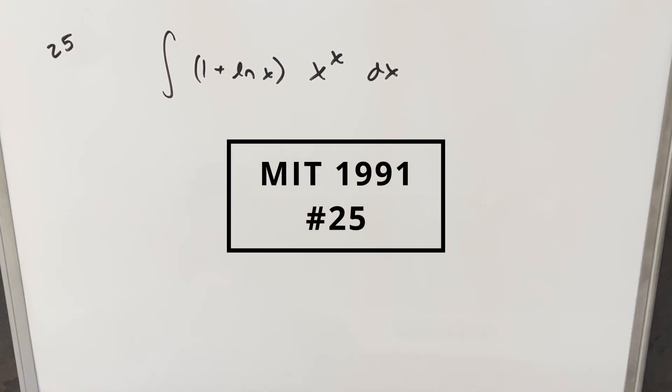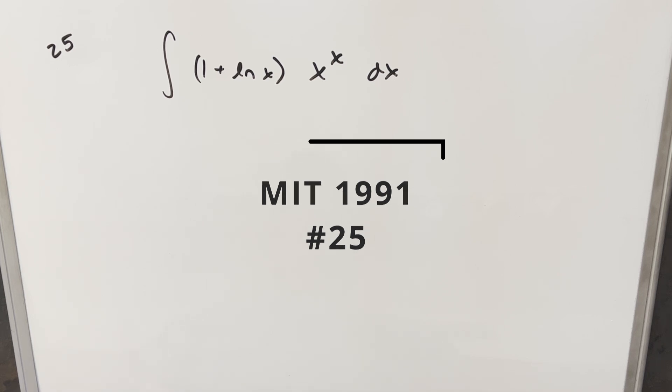We have here another integral. This one's from the MIT integration B, 1991, problem 25. We have the integral of 1 plus ln x times x to the x dx.